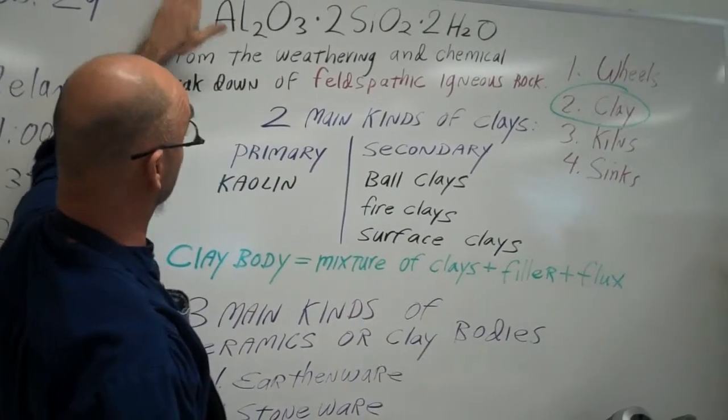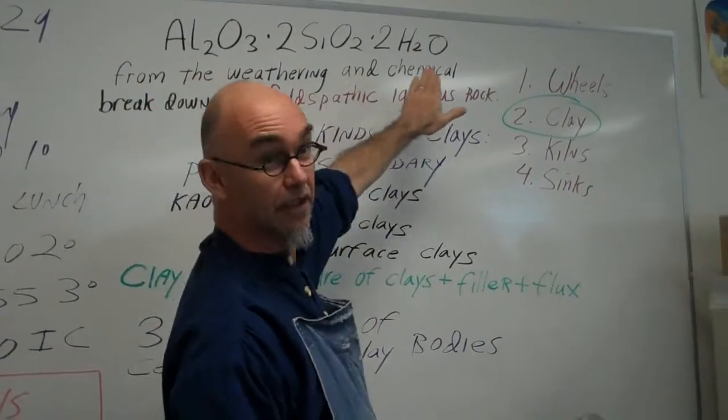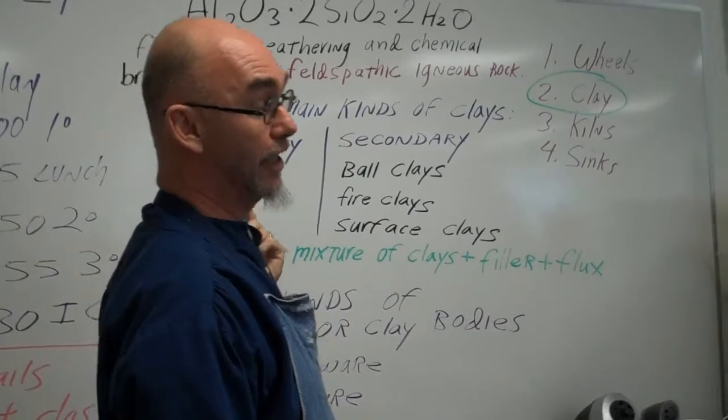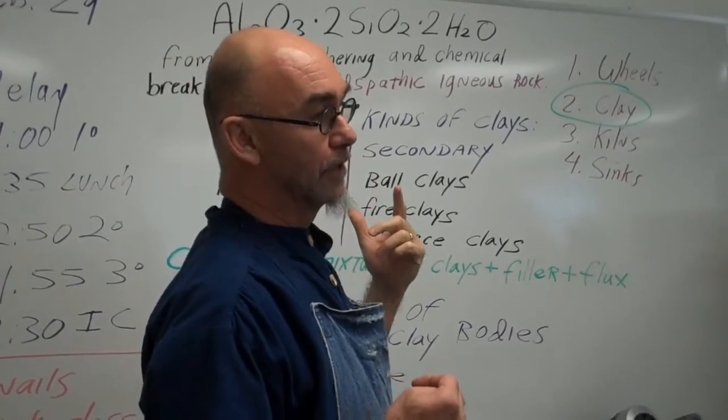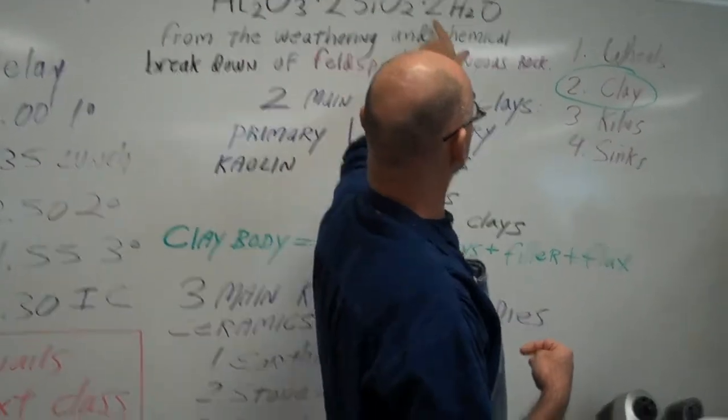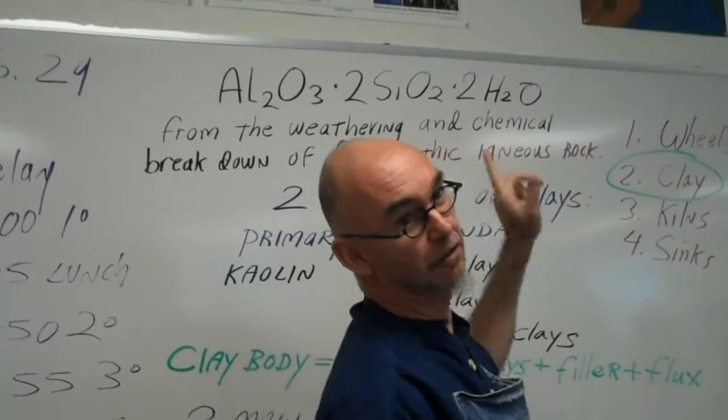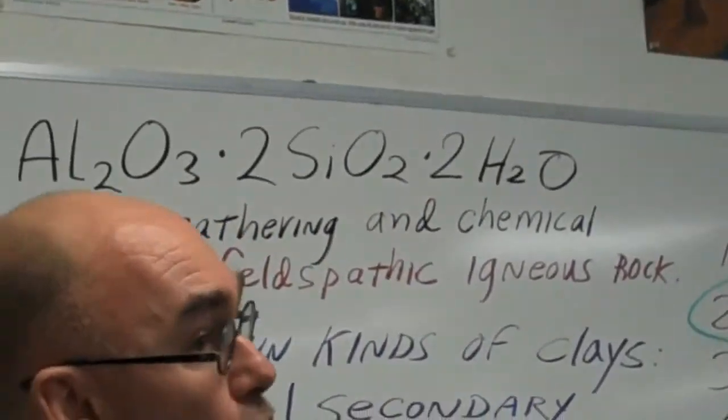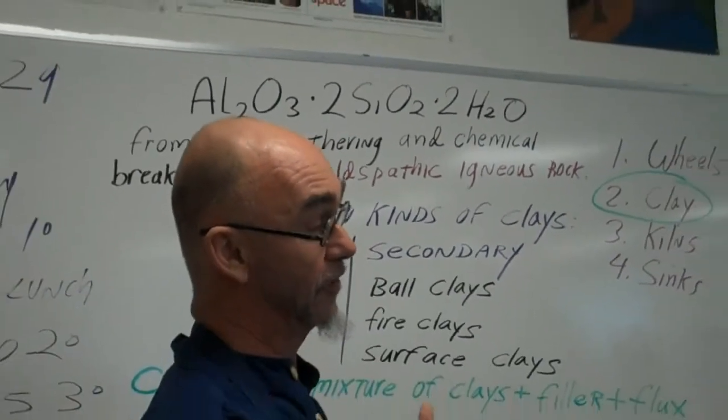One of the things in the reading you're about to read is this formula which is really recognizable to you guys. It's a formula for clay. By the way, the reading says clay has six H2O, which is incorrect. Clay has two H2Os, as you guys know. There are clays with more waters in the molecule, but we haven't learned about them.